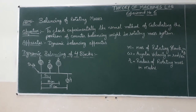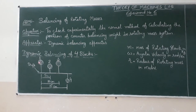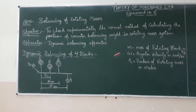The apparatus used in this experiment is the dynamic balancing apparatus. In this apparatus, we are balancing four weights or blocks rotating on a shaft. There are four weights: one, two, three, and four. They are rotating on a shaft with constant RPM, with angular velocity omega in radians per second. The mass of each block is m kg, rotating at the same radius in meters, but in different planes.